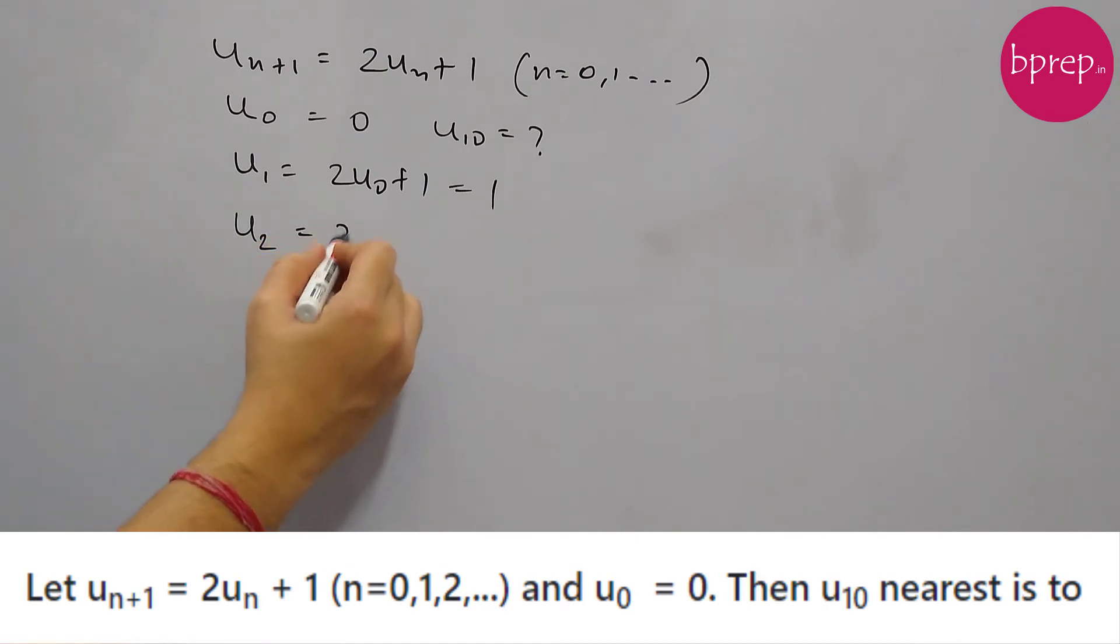Similarly, u_2 will be 2u_1 + 1, so this will be equal to 2 times 1, 2 plus 1, 3. And the same way if we proceed, u_3 will be 2u_2 + 1, so this will be 6, 3 to 6 plus 1, 7.